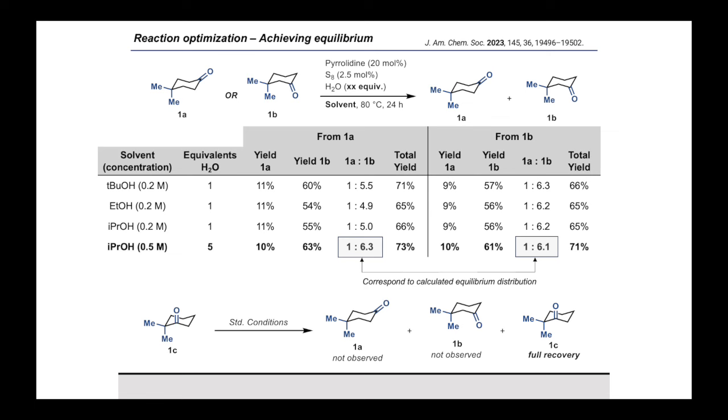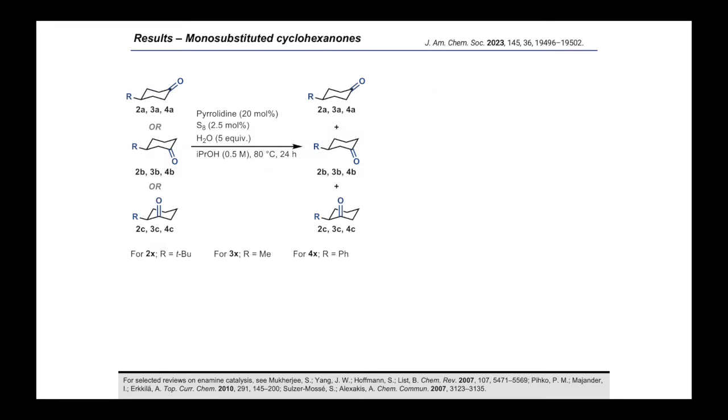Together, these results imply that the ketone chain-walking process is reversible, thermodynamically selective for the 3,3-disubstituted isomer, and not applicable to the formation or reaction of sterically encumbered ketones such as 2,2-dimethylcyclohexanone. This selectivity profile is reminiscent of that observed in enamine catalysis, which is typically ineffective with bulky substituents adjacent to the ketone.